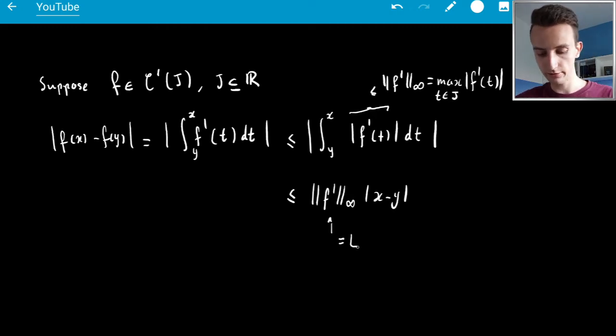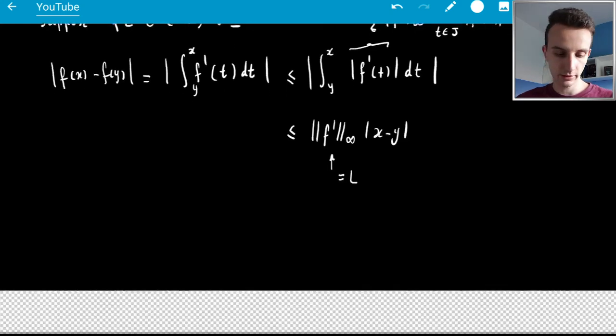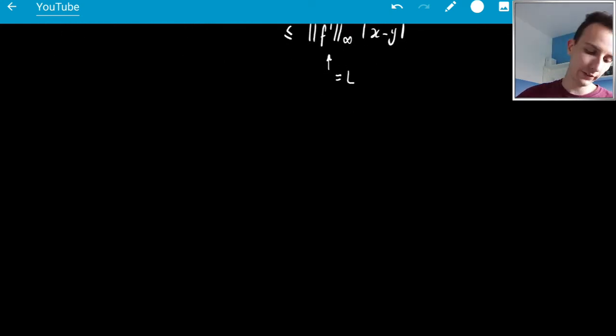and so every function that is C1 and bounded, which really does mean C1 and bounded at infinity, because if it's C1, it's bounded where it's not infinite, so if it's C1 and it's bounded at infinity, then its derivative, its maximum derivative can just be the Lipschitz constant, and so if you have some sort of example,